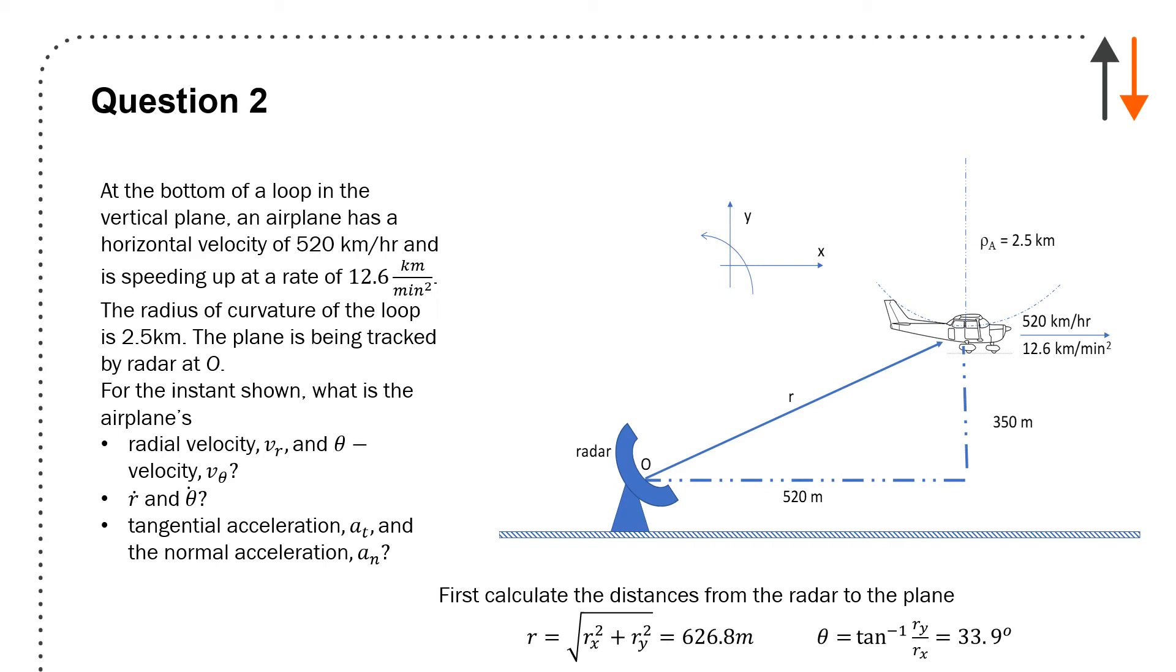At the bottom of a loop in the vertical plane, an airplane has a horizontal velocity of 520 kilometers per hour and is speeding up at a rate of 12.6 kilometers per minute squared. The radius of curvature of the loop is 2.5 kilometers. At the instance shown, what is the plane's r and θ, velocity vr and vθ, r dot and θ dot, and the tangential and normal acceleration?